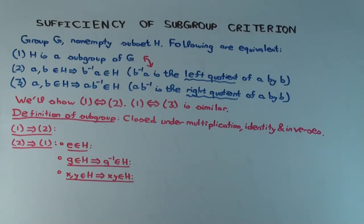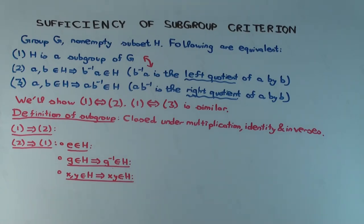This talk is going to be about a certain criterion which gives a necessary and sufficient condition for something to be a subgroup. It's not the usual definition of subgroup; it's just an ordinary way of characterizing subgroups.